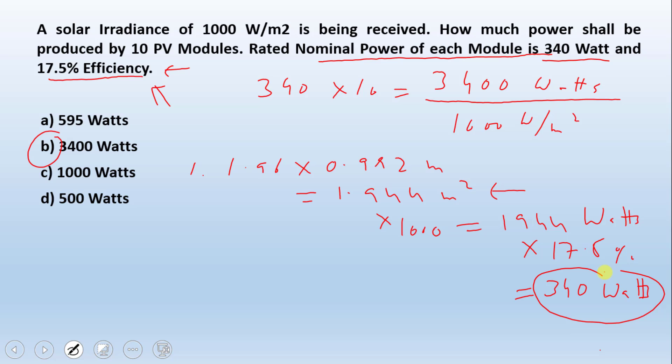So efficiency is used when you have the area of the module, and under STC condition, 1000 watts per meter square is basically called STC condition. We will look into this once we go into other questions.